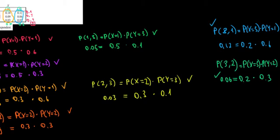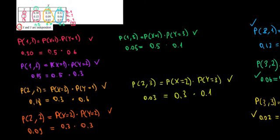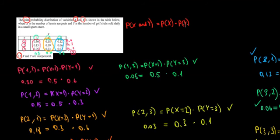And the final one: the probability of x equals 3 and y equals 3 should equal the probability of x equals 3 times the probability of y equals 3. The probability of x equals 3 is 0.2, and the probability of y equals 3 is 0.1. Multiplying the two gives 0.02, and checking the cell one last time, it's 0.02 as well. We've now checked all 9 relationships, and all of them hold true that P(X,Y) equals P(X) times P(Y). So we can say the variables are independent, which matches the answer key. And we are done.